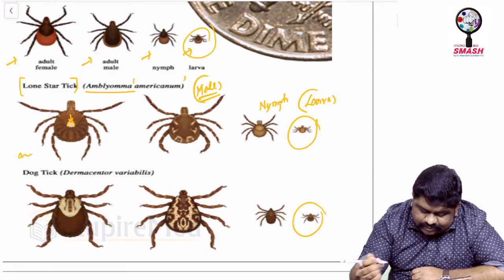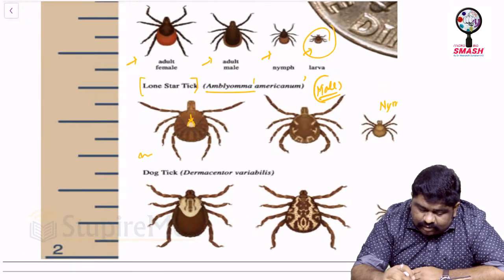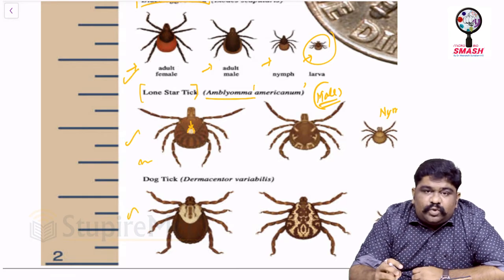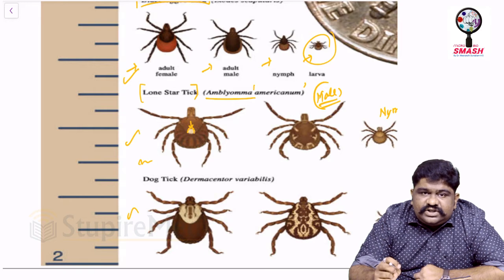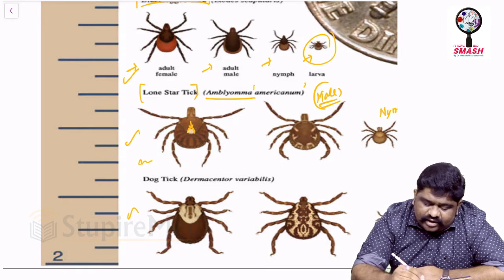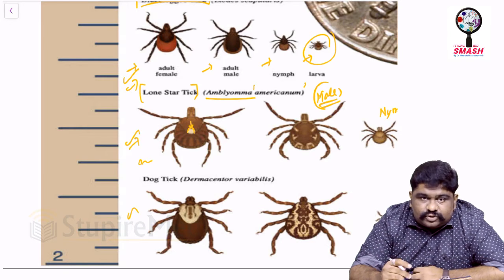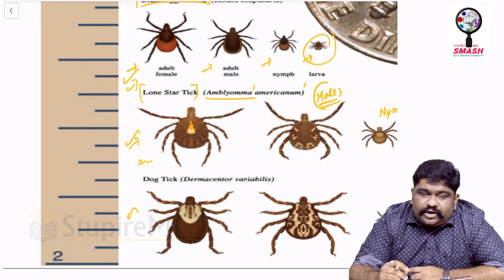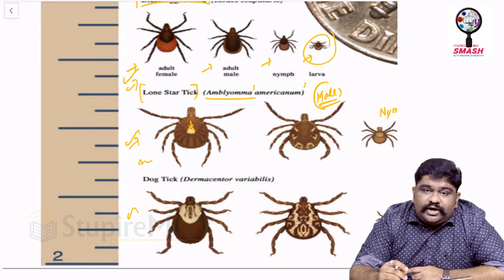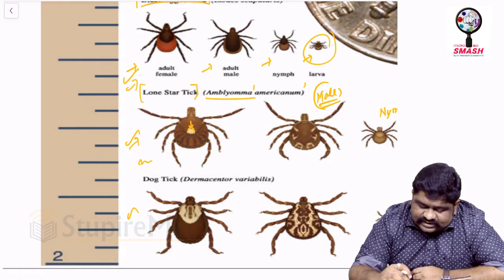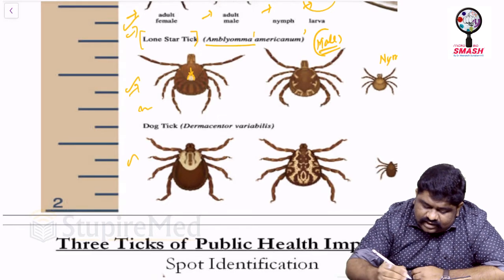In larvae, ticks may not be distinguishable, but adult females can be clearly identified. Females are the ones who feed on human hosts because they need energy and nutrition during pregnancy. The same explanation applies to mosquitoes — only female mosquitoes bite, and specifically pregnant females bite to obtain blood as nutrition for their developing eggs.